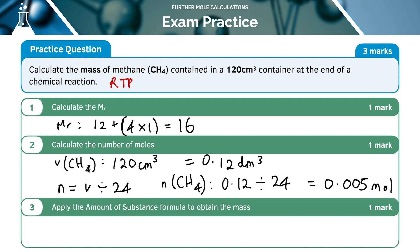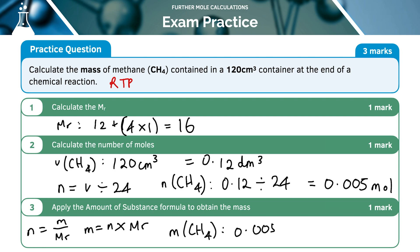Finally, using moles equals mass over MR, rearranged to mass equals moles times MR: the mass of methane M(CH₄) equals 0.005 times 16, which is 0.08 grams.